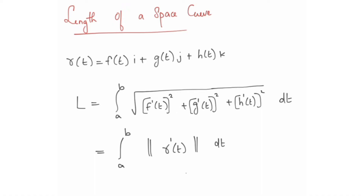Suppose we have a vector-valued function r(t) = f(t)·i + g(t)·j + h(t)·k. This is the vector-valued function. The arc length L is equal to the integral from a to b of the square root of [f'(t)]² + [g'(t)]² + [h'(t)]² dt.